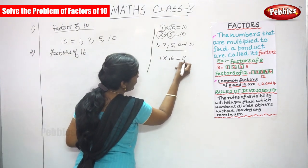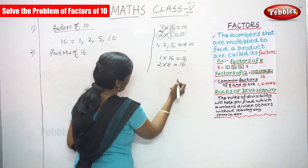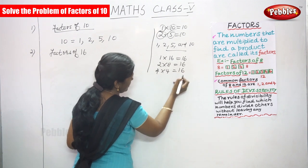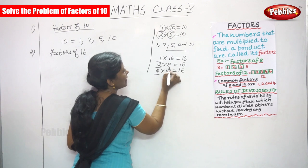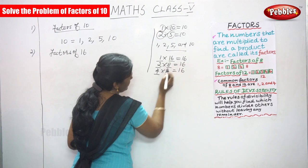So write the table: 1 into 16 is equal to 16, 2 into 8 you can get 16. Next 4 into 4 you can get 16. So 1, 2, 4, 8 - if 4 comes 2 times, you write only 1 time is enough - 8 and 16.